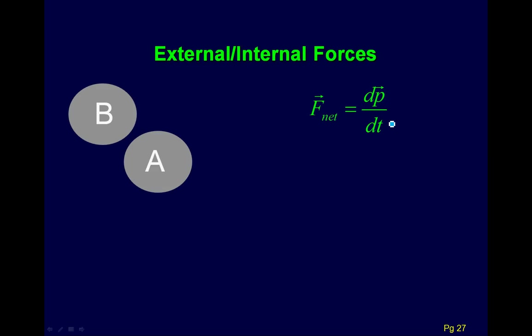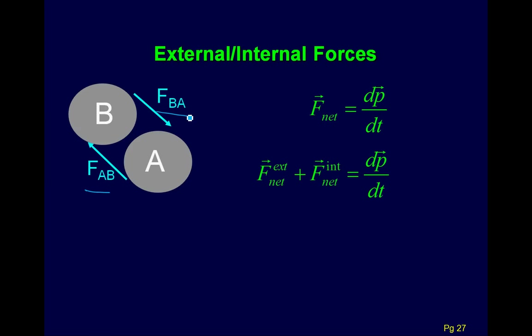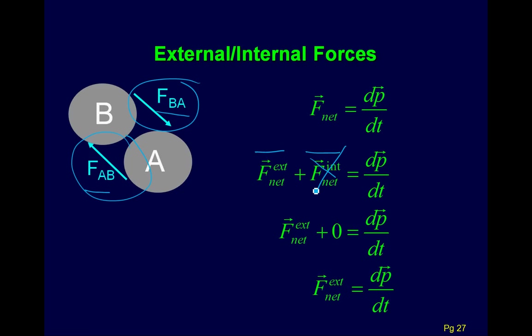Let's look at a system of ball A and ball B. If ball A and ball B collide, they're going to apply equal and opposite forces on each other according to Newton's third law — the force of A on B and the force of B on A. If we look at Newton's second law for the whole system, we can break the net force into external and internal parts. The internal forces always come in pairs and are always equal and opposite due to Newton's third law, so the internal part always cancels out to zero. We can rewrite Newton's second law for a system as: the net external force equals dP/dt.